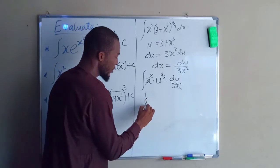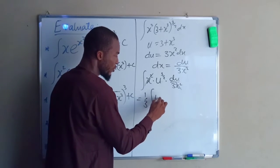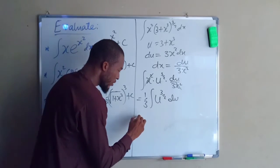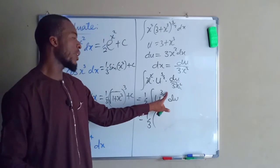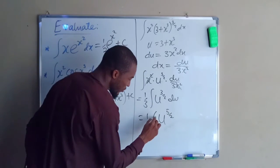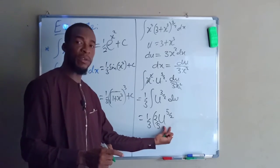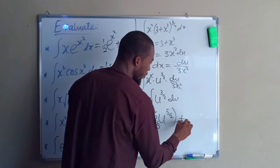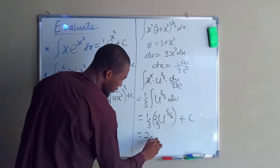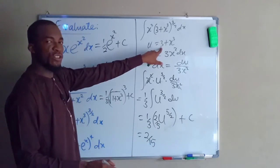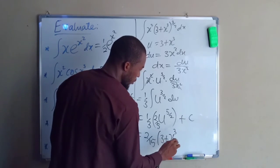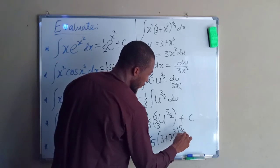We can factor out 1 over 3. So we have 1 over 3 times the integral of u to the power of 3 over 2 du. Adding 1 to the exponent gives u to the power of 5 over 2. Taking the reciprocal, we multiply by 2 over 5, which is the same as dividing by 5 over 2. This gives 1 over 3 times 2 over 5 equals 2 over 15. Then u equals 3 plus x cubed, so the answer is 2 over 15 times (3 plus x cubed) to the power of 5 over 2 plus C.